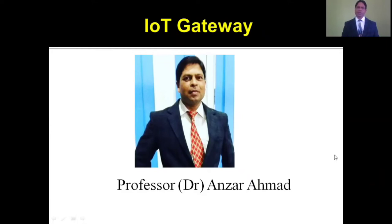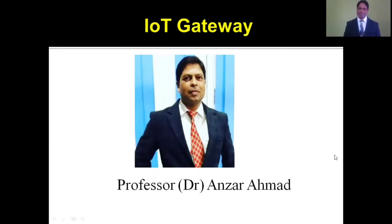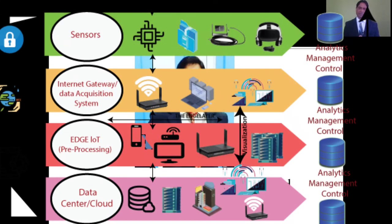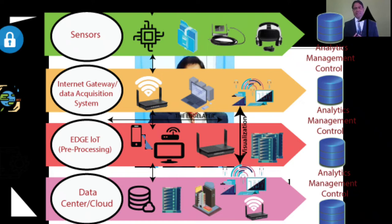In previous videos we discussed the first stage, which is called the device layer and includes sensors and actuators. The second stage is called IoT data acquisition system. Whatever data is sent by sensors is given to the data acquisition system, where it is converted into digital form from analog form.